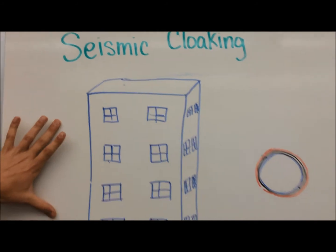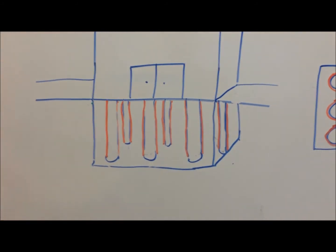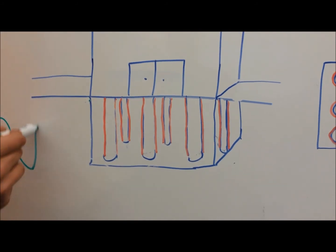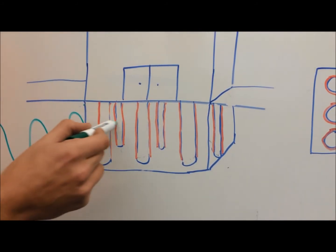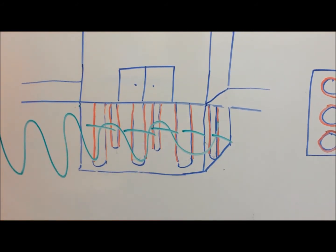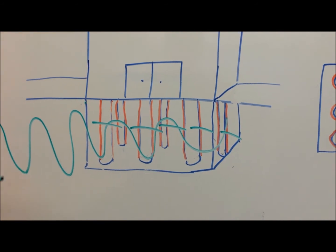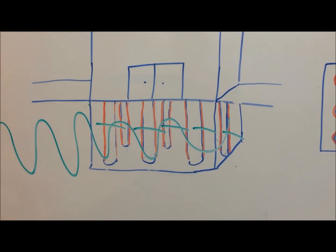Take a modern-day skyscraper, for example. Most of them have a basement filled with structural supports. When a seismic wave comes through, it damages these supports, causing the structure to collapse. With metamaterial cloaking, as seen in red, the waves are actually bent around the structural supports.